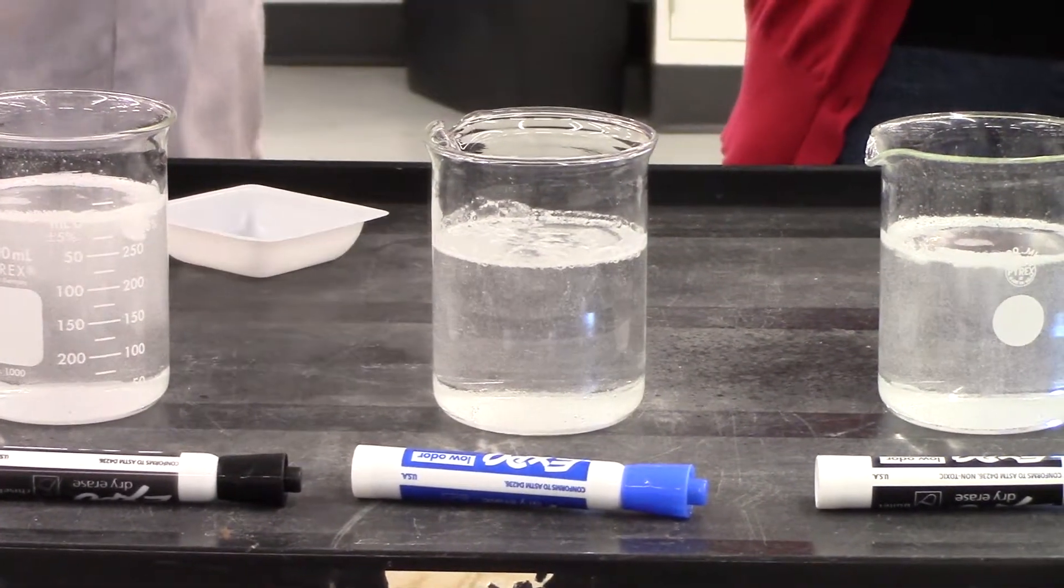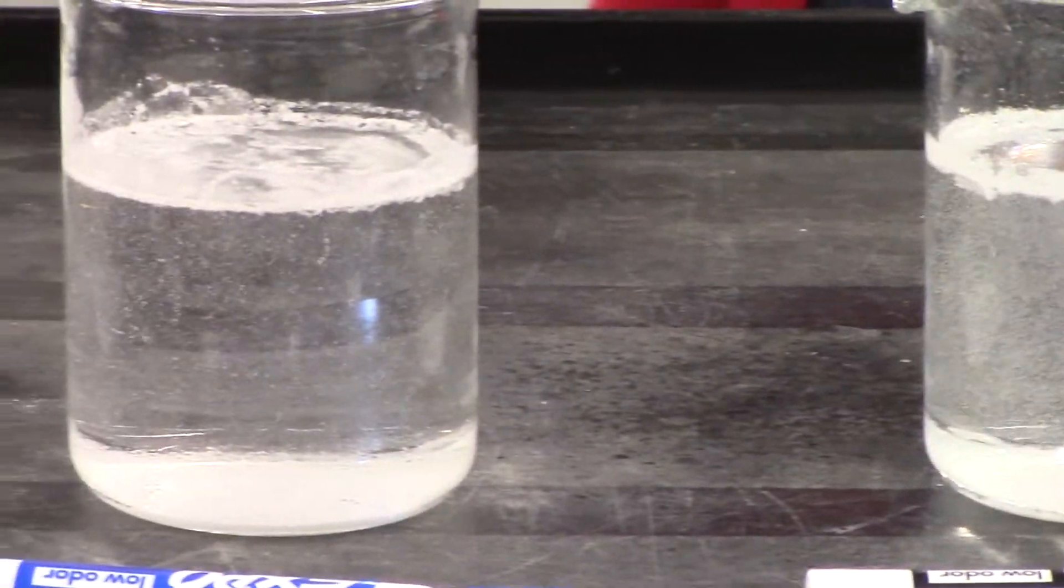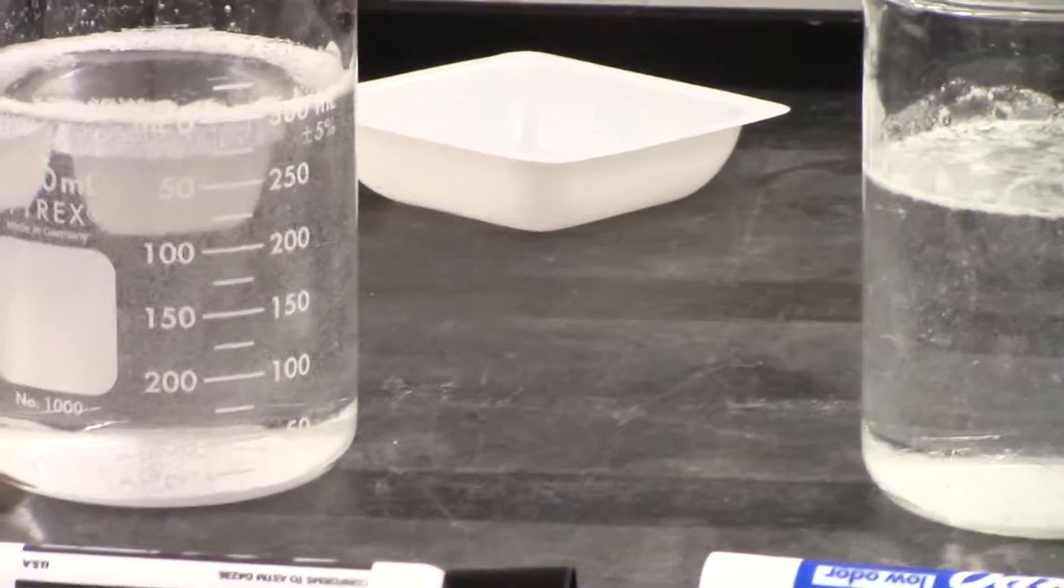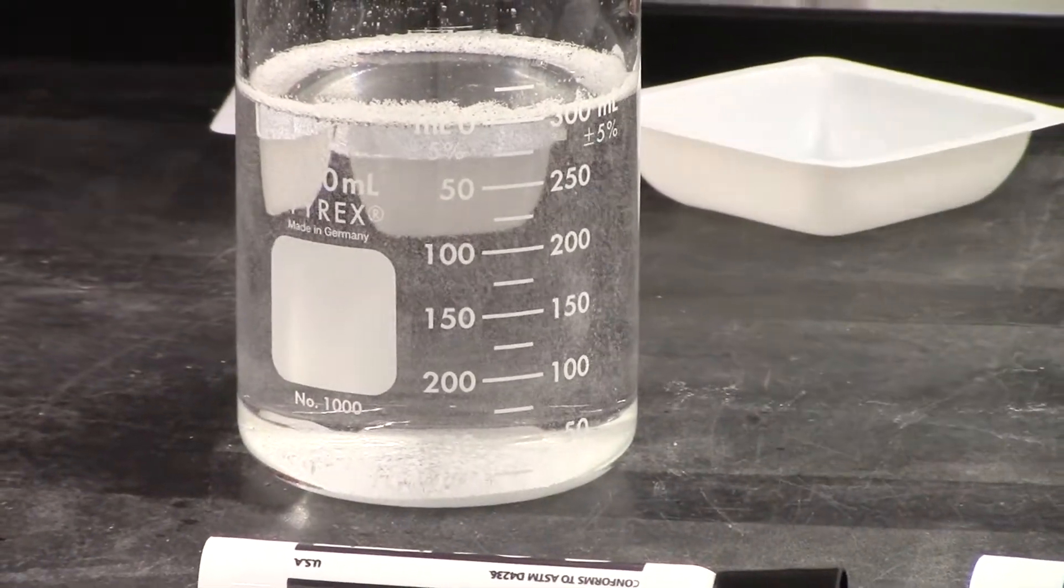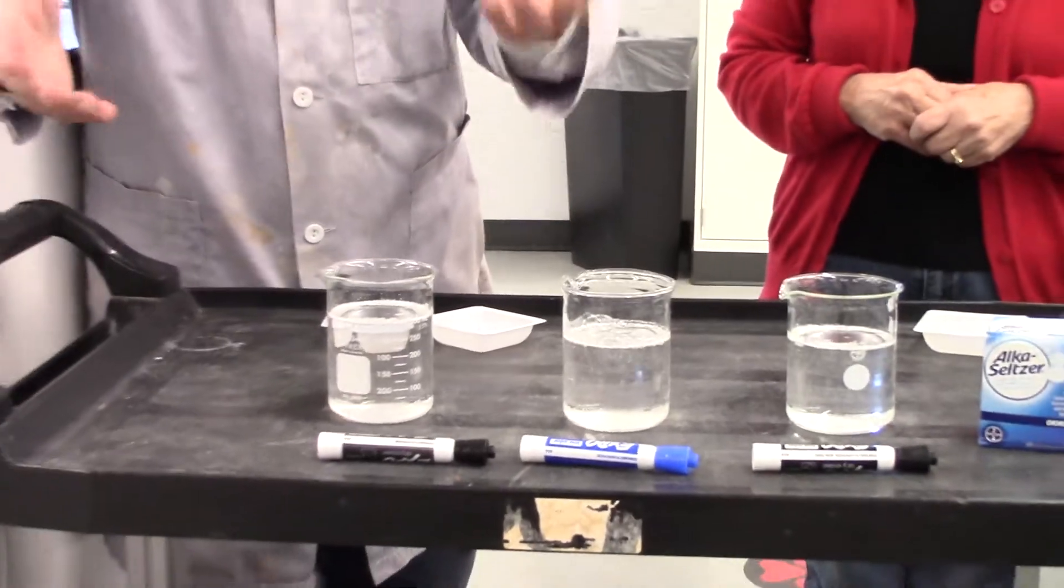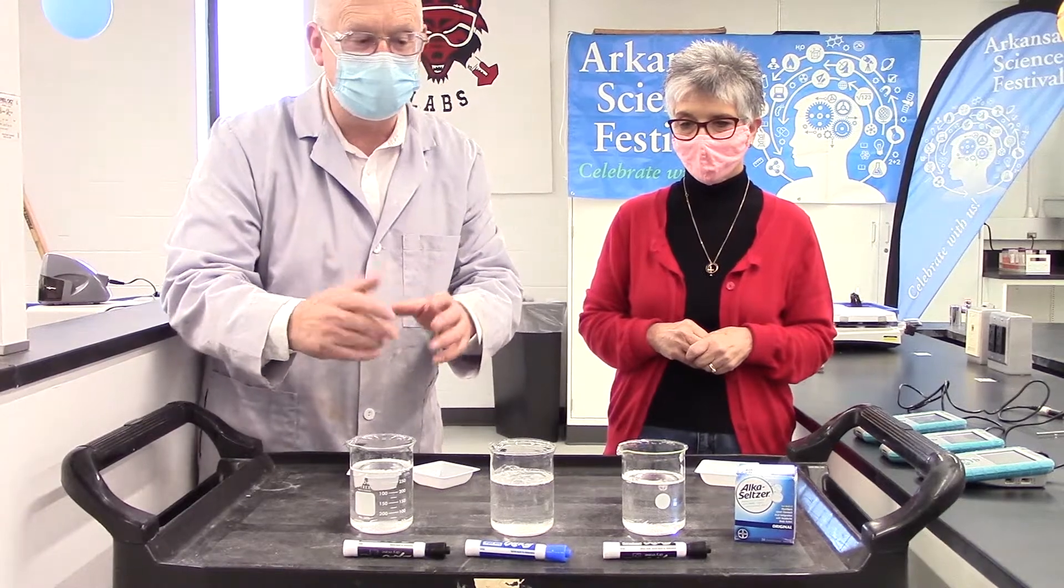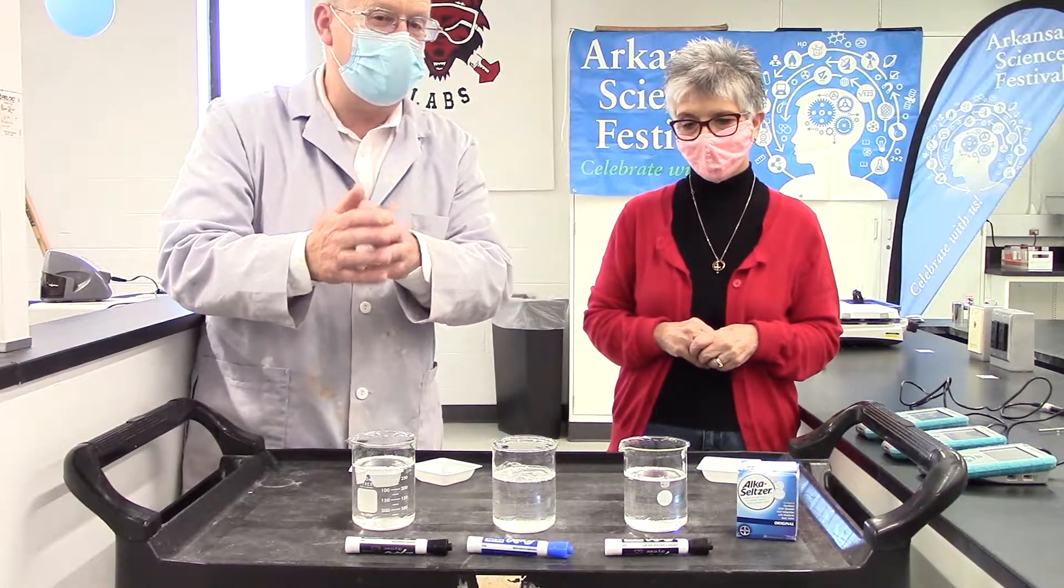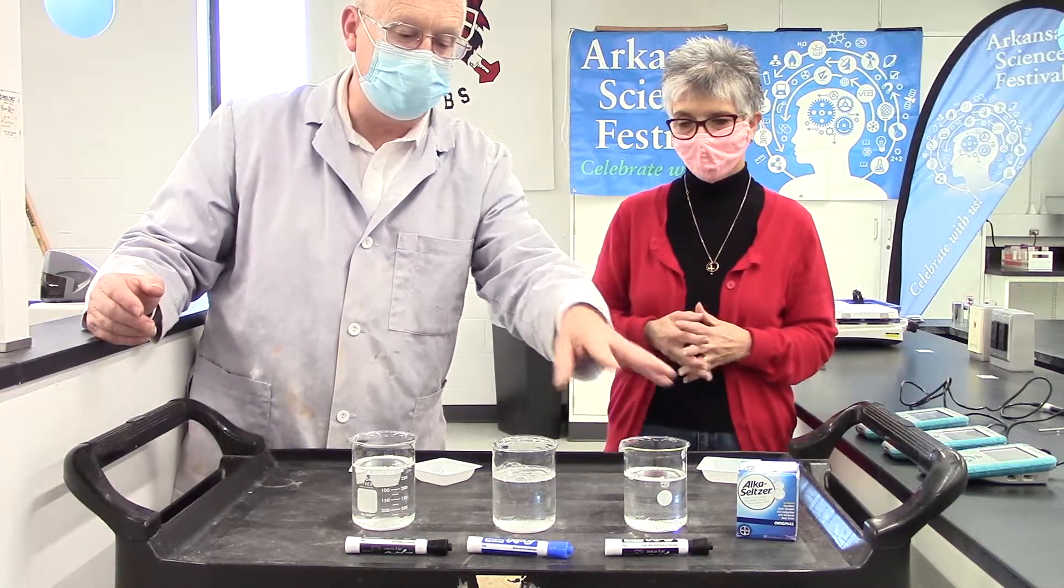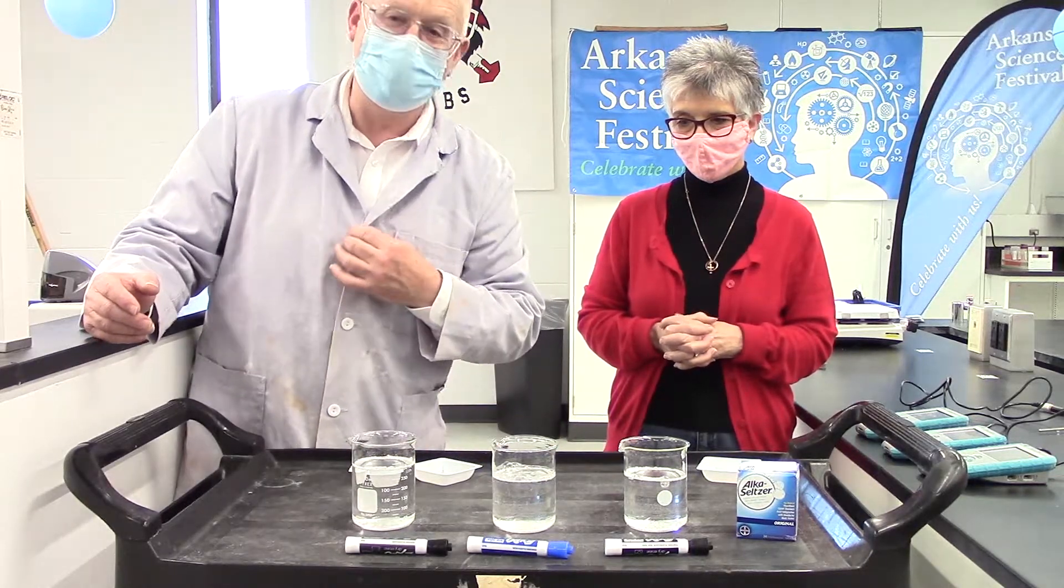So the powder reacted the fastest. The pieces that broke up came in second, and the large tablet itself finished third. This is all because of the surface area. When you cut the tablets up into small particles like dust, they have high surface area—lots of room to react. The pieces, not as much surface area, larger than the individual particles. They had a very good reaction, but not as fast as the powder. And our tablet, well, it did the best it could.